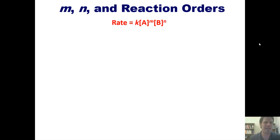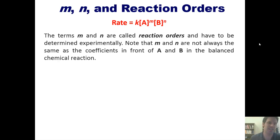So what in the world are M and N? The terms M and N are called reaction orders. These have to be determined experimentally. Please remember that M and N are not necessarily the same as the coefficients in front of A and B in the balanced chemical equation. Sometimes they can be the same, sometimes they're different, but they don't have anything necessarily to do with each other. M and N can only be determined by experiment.